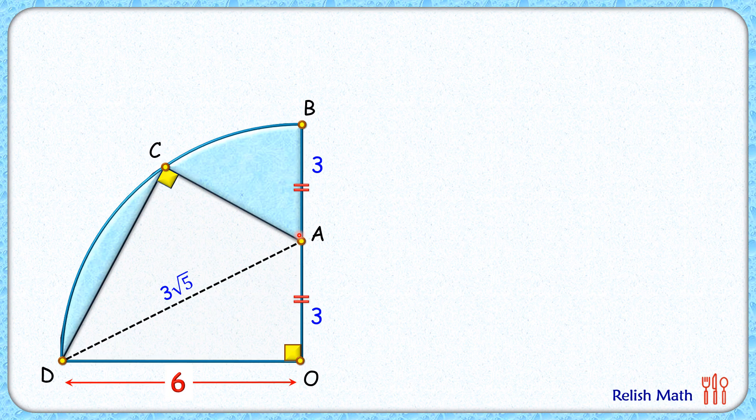Let's assume CA is x cm and CD is y cm. Now this blue area which we have to find is nothing but area of this quarter circle, which is pi by 4 r square, minus area of this triangle DAO, which is half of base into height, minus area of this green triangle with base as x and height as y.